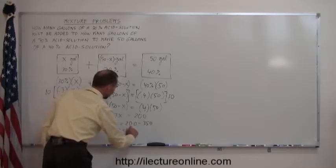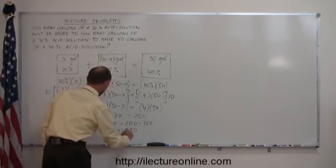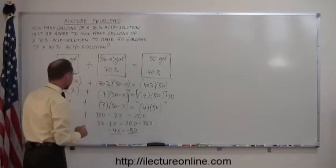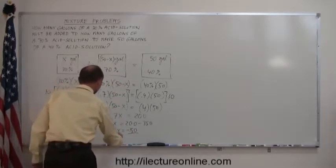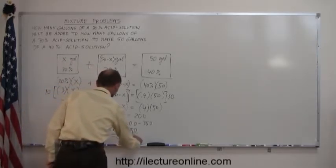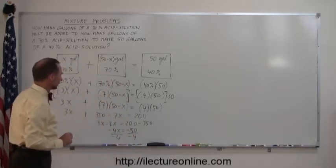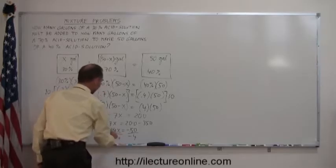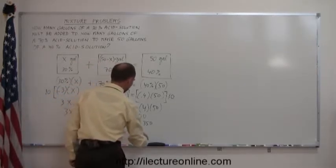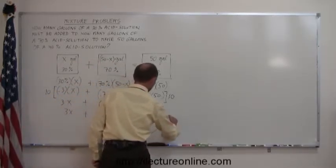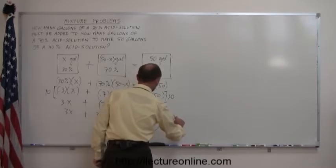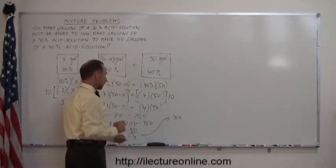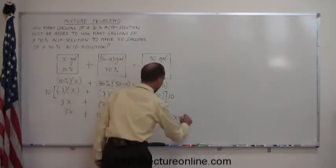200 minus 350 is minus 150. Divide both sides by minus 4. Minus 4 cancels. And 150 divided by negative 4, that gives me x is equal to, that goes in there 37 and a half times.